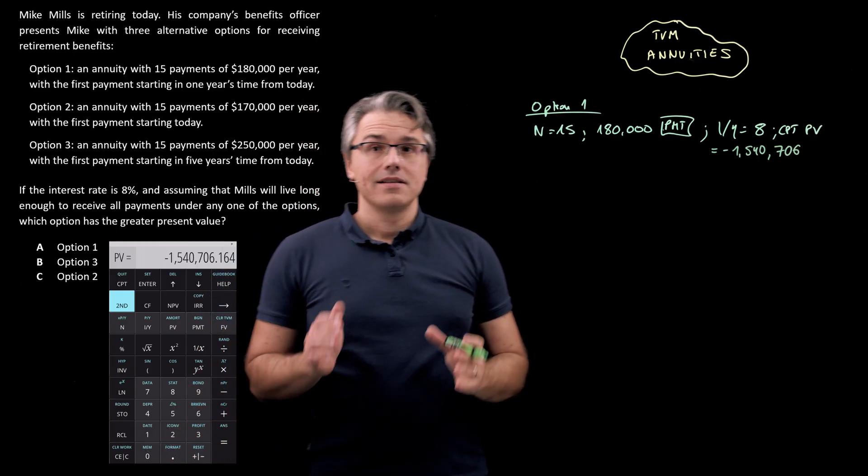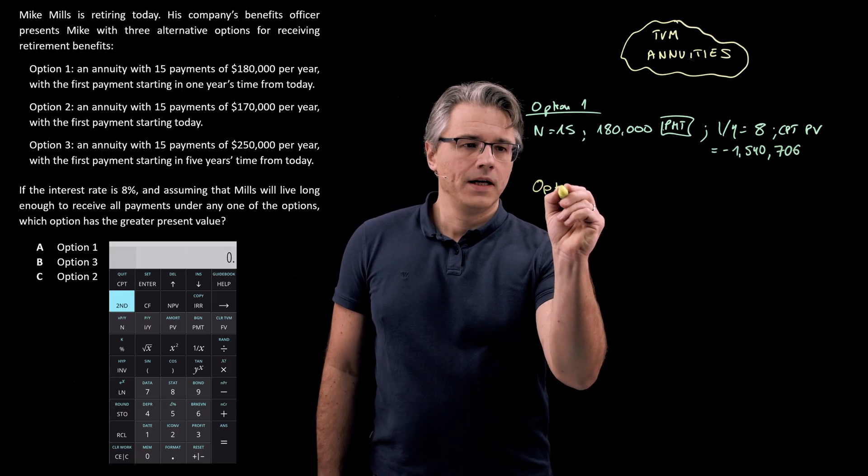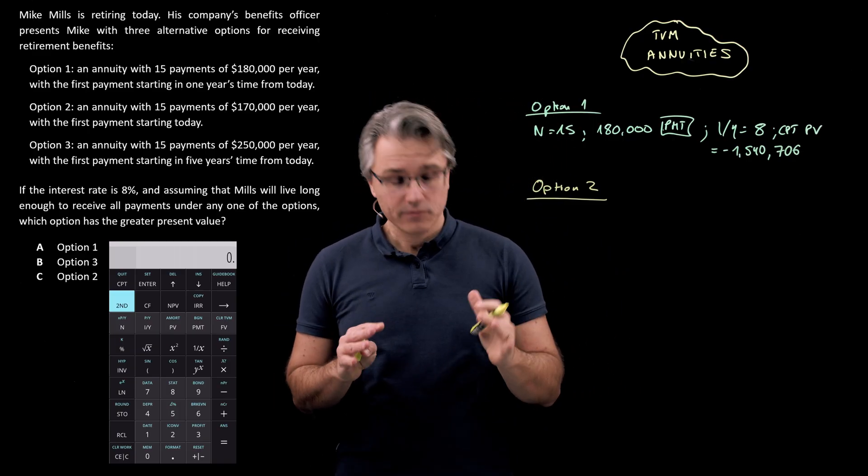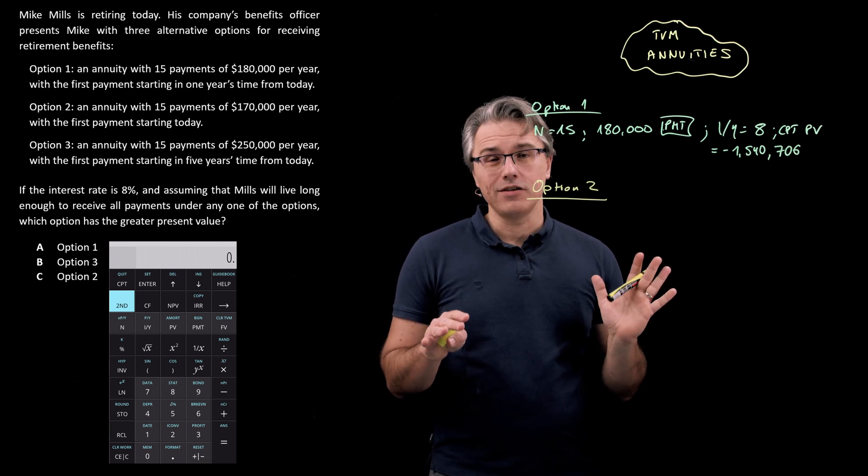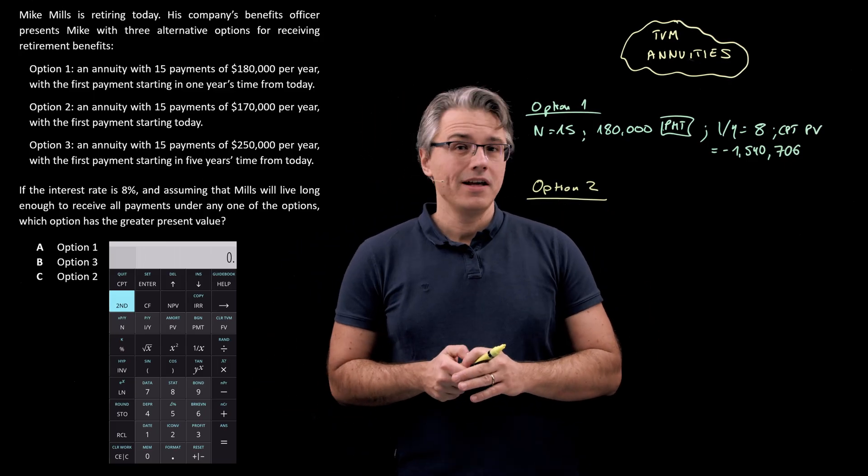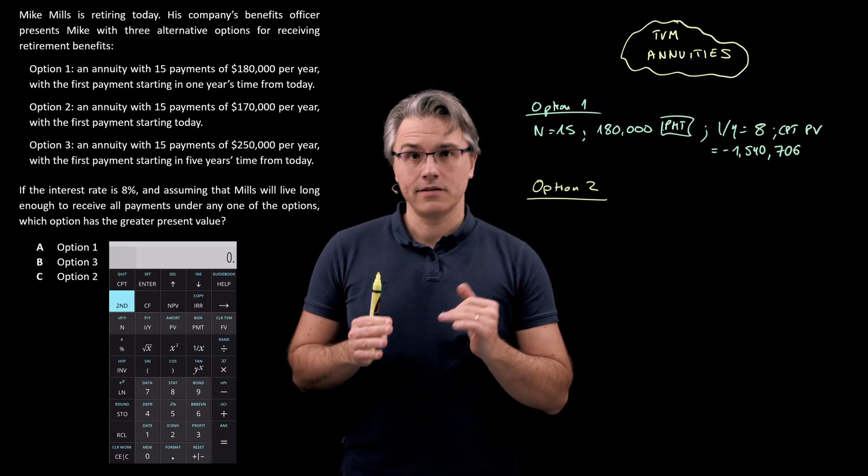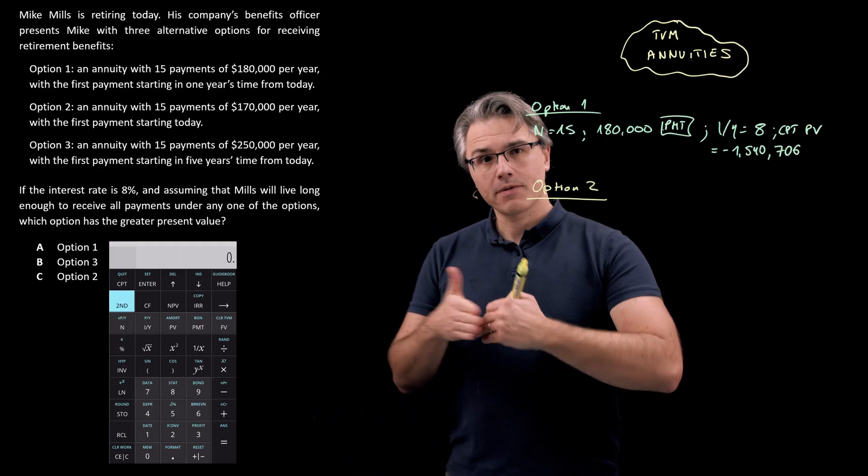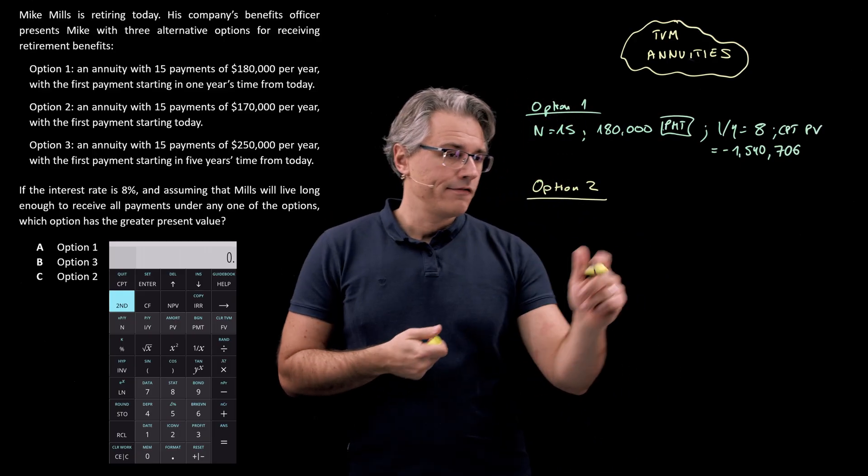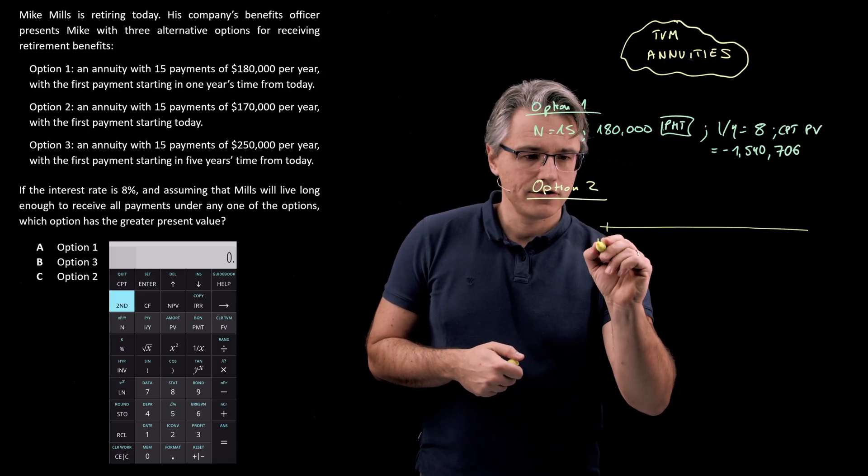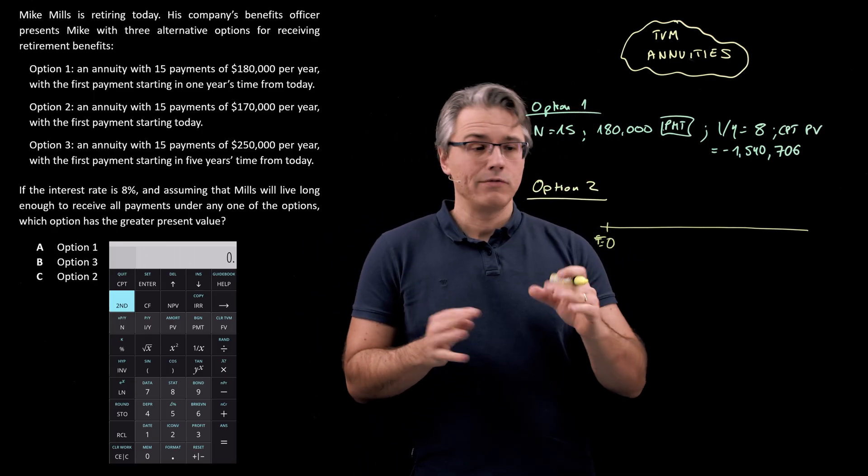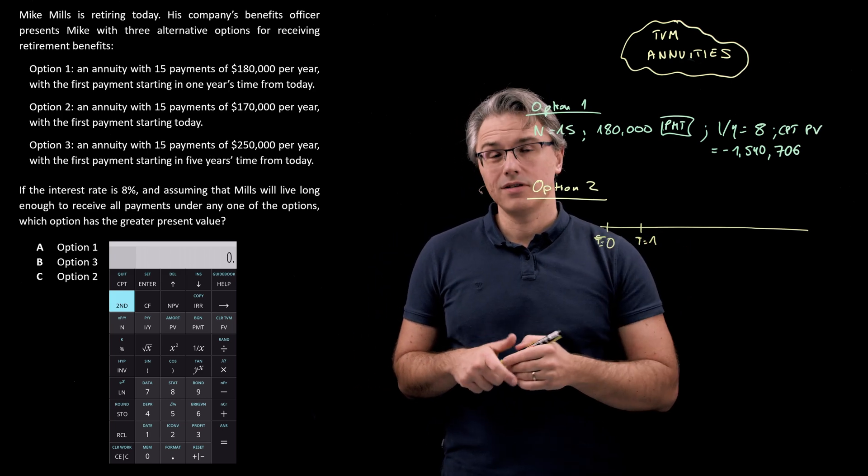Let's move on to the second one, option number two. And this is where it becomes a little more complicated because there are 15 payments of $170,000 each. But if you try to use your calculator to compute this in the same way as before, what you've got to remember is that your calculator, when working with PMTs, always assumes that the first payment in that sequence occurs one period from today. So the problem is, on a timeline at time zero right now, the calculator assumes the first one happens at T=1, which is not necessarily the case.